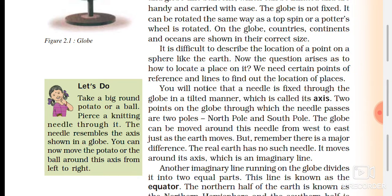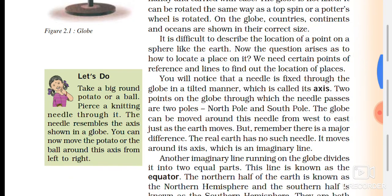So if you want to locate places on the globe, you will get the exact location. We need certain points of reference and lines to find out the location of places. For example, if you want to know where India is located on the globe and have never seen India, you need specific points or lines to identify it exactly.